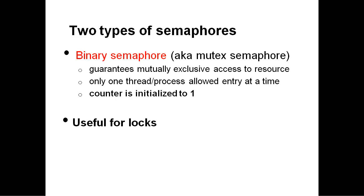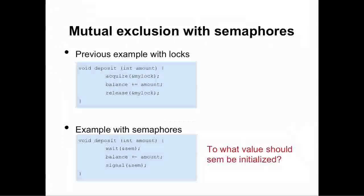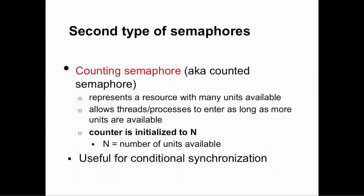The major use for a binary semaphore is as a lock, and the key feature is that the counter is initialized to 1. Here's an example of how you might replace code that used a lock with a semaphore: where we used to have a call to acquire and release a lock, we instead call wait to wait for a semaphore and signal to signal the semaphore. The question is what value to use to initialize the semaphore — the answer is 1, because we only want to let exactly one thread acquire the semaphore at a time.